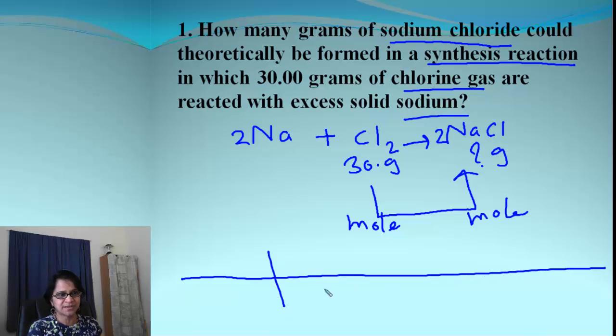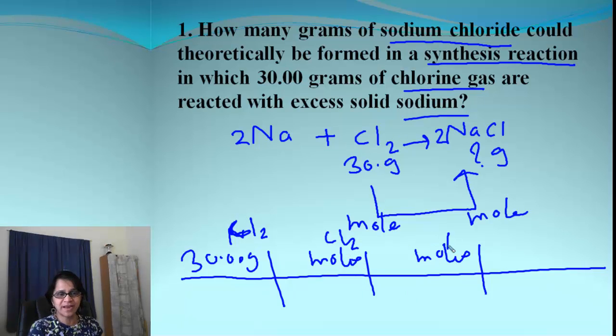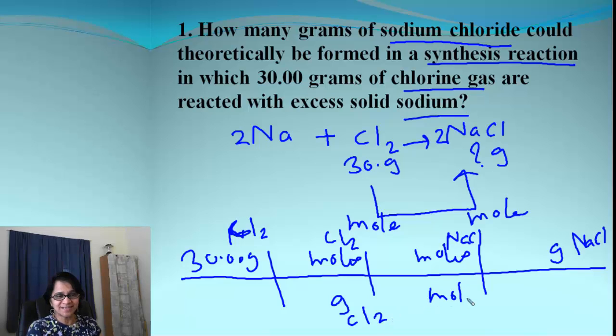So let's write down all this into our grid and let's see what we get. So that is beginning 30.00 grams of chlorine, and then we are going to go to moles of chlorine, and then we go to moles of NaCl, and then we go to grams of NaCl. So you know now the drill. We need to have grams of chlorine here.